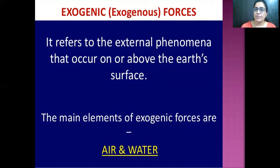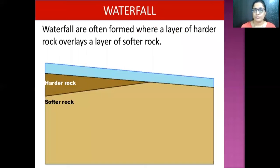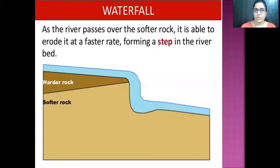Exogenic forces refer to the external phenomena that occur on or above the earth's surface. The main elements of exogenic forces are air and water. Waterfalls are often formed where a layer of harder rock overlays a layer of softer rock. As the river passes over the softer rock, it erodes it at a faster rate, forming a step in the riverbed.